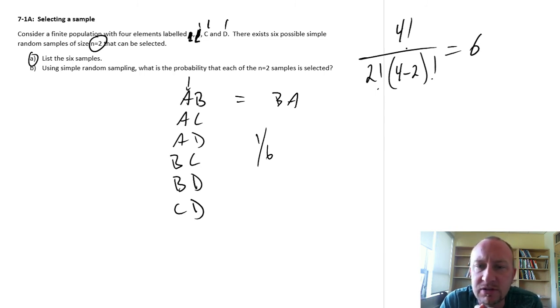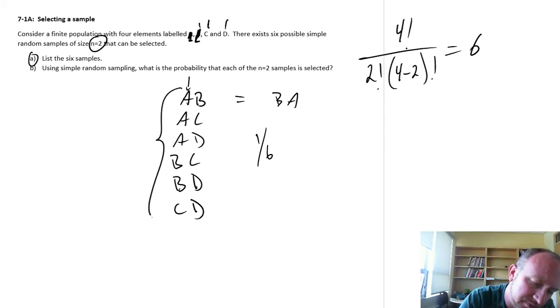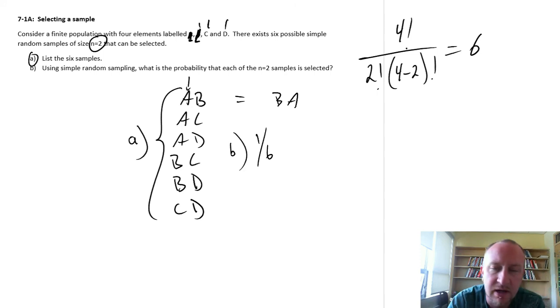So that's all there is to it for this exercise. So here, our answer for a is everything here, and our answer for b is just one-sixth. Okay, good. I hope that was okay for you. Thanks. Bye-bye.